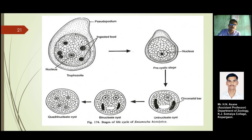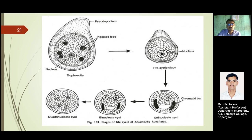The uninucleated cyst develops structures known as chromatoid bars, indicating the cyst is in the process of multiplication. The uninucleated cyst then gets converted into the binucleated cyst in the large intestine. You can see the chromatoid bars in the binucleated cyst also. The binucleated cyst again gets converted into the quadranucleated cyst — the fully mature form of these stages of the life cycle of Entamoeba histolytica.